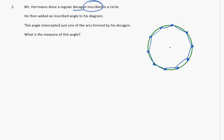Now he added an inscribed angle to his diagram. This angle intercepted just one of the arcs formed by the decagon. So we have some sort of inscribed angle. It doesn't say where it is. So I'll just draw it here. And it's intercepting one of these arcs formed by the decagon. What is the measure of this angle?